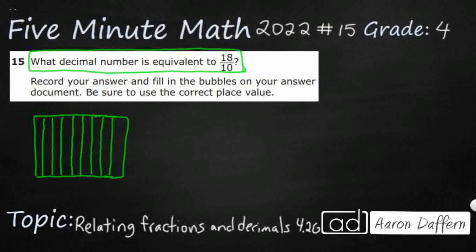So we've got our ten sections. I'm going to shade them in: one-tenth, two-tenths, three-tenths, four-tenths, five-tenths, six-tenths, seven-tenths, eight-tenths, nine-tenths. As you can see, I didn't make it go far enough, so let's add that last ten-tenths.